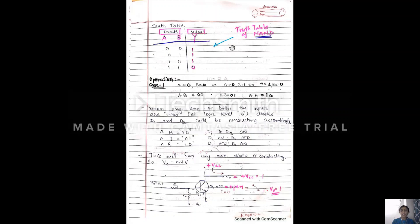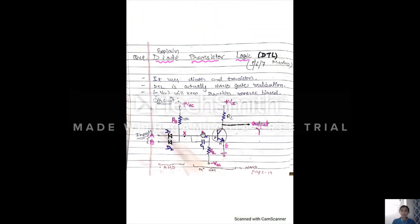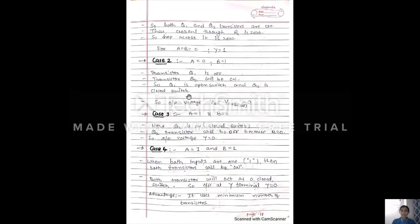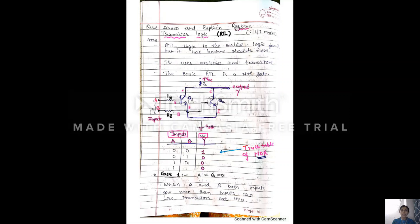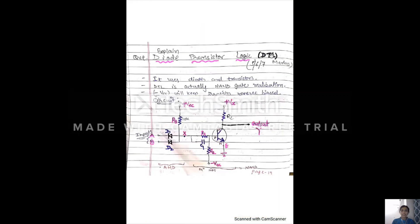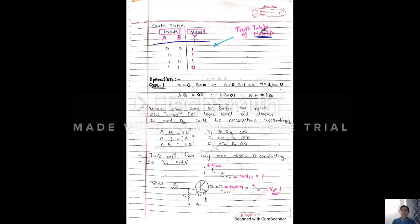This truth table indicates a NAND gate. So DTL logic family is the realization of a NAND gate. To conclude: RTL is the realization of a NOR gate, and DTL is the realization of a NAND gate. If you have any confusion, refer to the class notes and notes posted on the group. You can call or message me anytime. Thank you all.